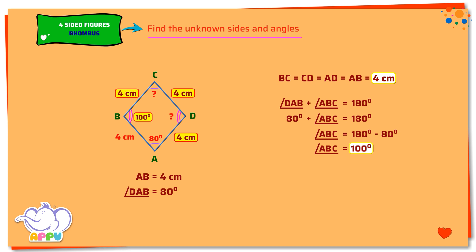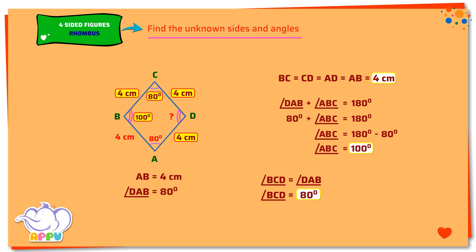Now let's find the remaining angles, BCD and CDA. We know that a rhombus has opposite angles equal. Angle BCD equals angle DAB, which is equal to 80 degrees. Angle CDA equals angle ABC, which is equal to 100 degrees.